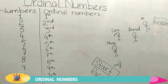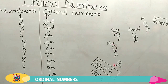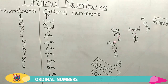Yes, very good. Ali got first position. Now tell me the position of the remaining 4 children: Ahmed, Sarah, Musa, and Isa. Yes, very good. Ahmed is in 2nd position. Sarah is in 3rd position. And Isa took the last position, 5th.